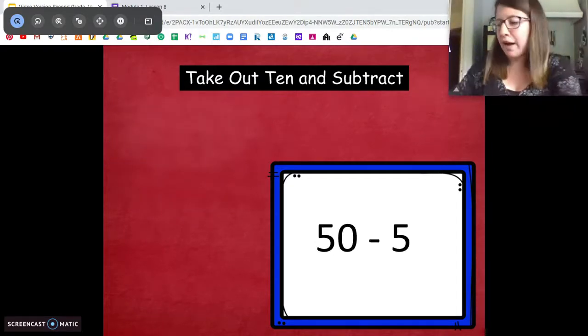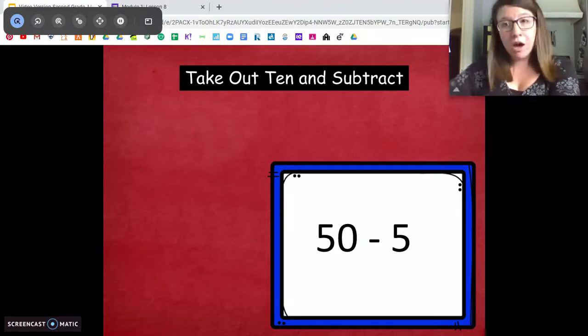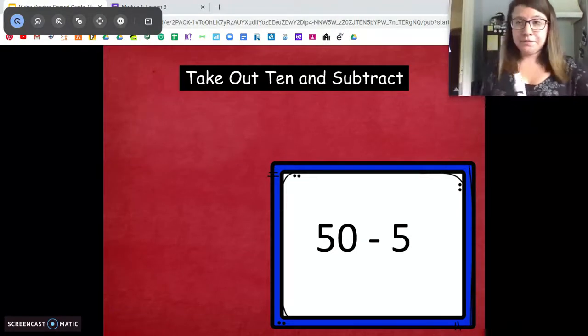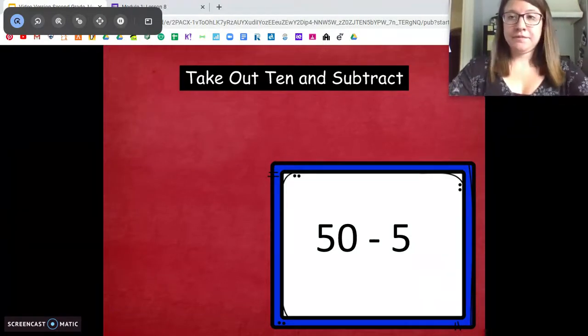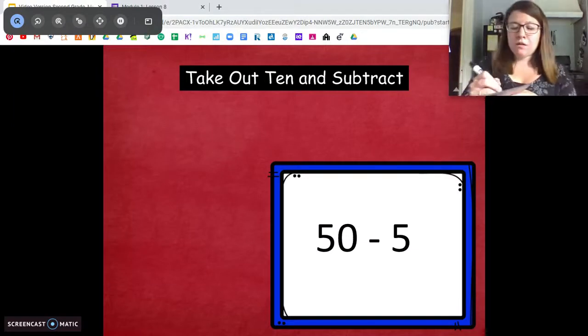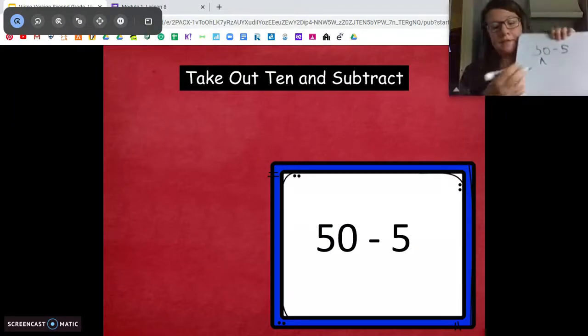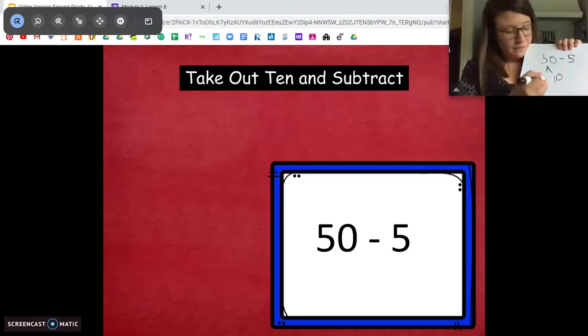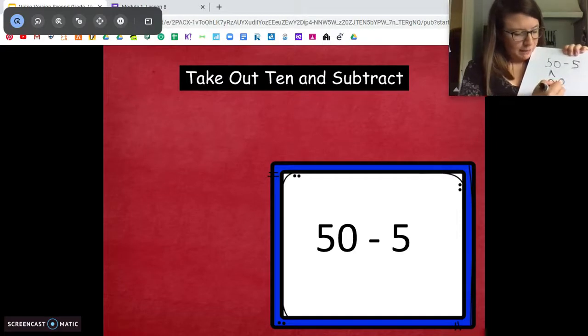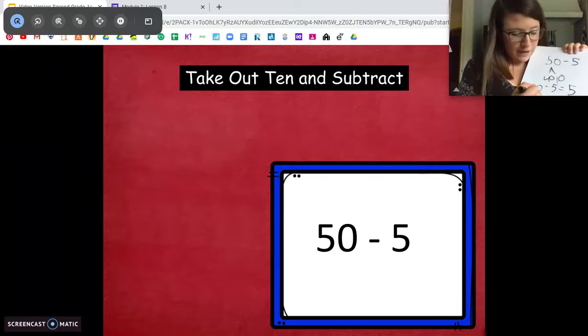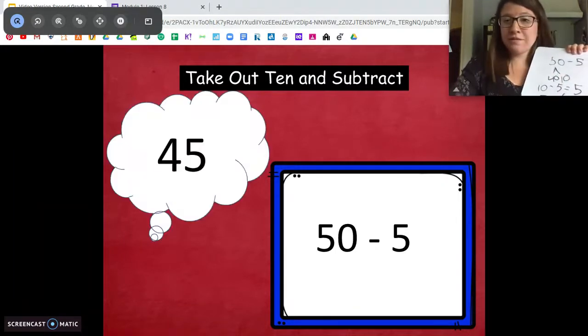Try this next one on your own. 50 minus 5. Go ahead. Pause and solve. Ready? Okay. So 50 minus 5. We'll break apart the 50 into a 10 and our other part is 40. And then we do our 10 subtraction. 10 minus 5 equals, we know that one, 5. And then we add the 5 to our extra 40 and we get 45.